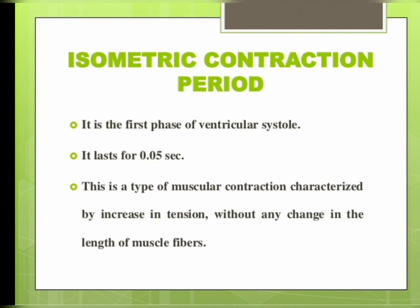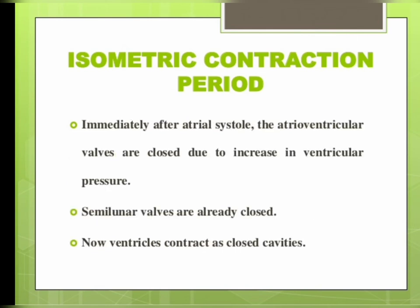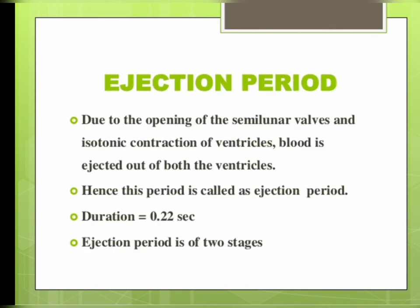This is a type of muscular contraction characterized by an increase in tension without any change in the length of the muscle fiber. Immediately after atrial systole, the atrioventricular valves are closed due to an increase in ventricular pressure, and semilunar valves are already closed. The ventricles now contract as closed cavities.